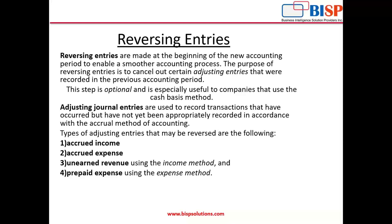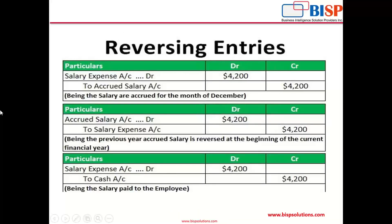Let's see an example of accrued expense. For the month of December, my salary expense is accrued as $4,200, but I will pay it in January — say on the 5th of January. In December, I have to record it following the accrual method. So: salary expense account debit with $4,200, and to accrued salary — it's a liability because it has not yet been paid in December.